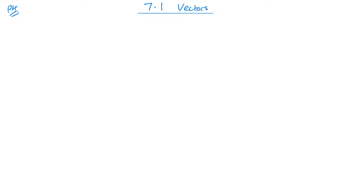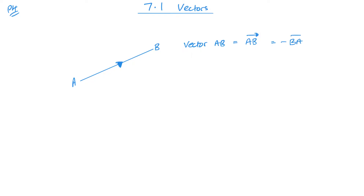A vector is usually represented as a straight line between two points. If I call this A and B and give it a direction, it now has magnitude and direction, and this would be the vector AB, which we write as AB with an arrow above it — meaning it's the vector from A to B. If I wanted to go in the other direction, from B to A, that would be the negative: minus BA would be the same thing, just with a changed sign.